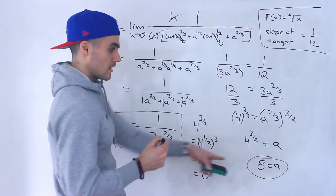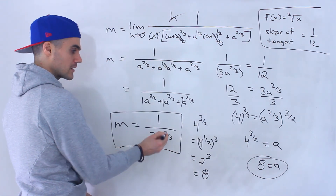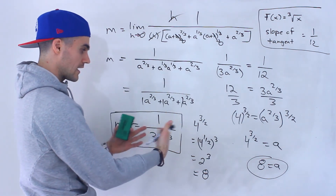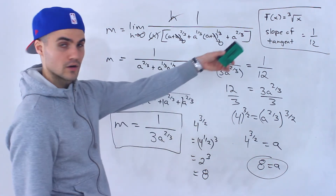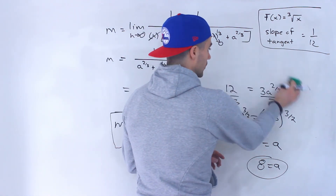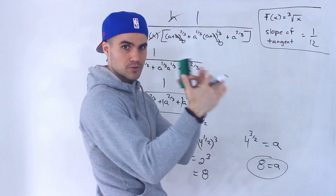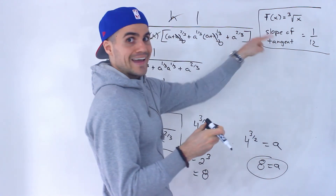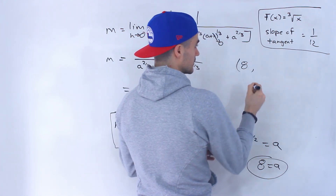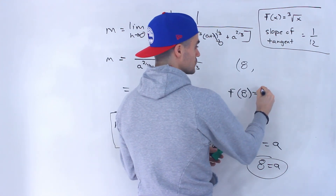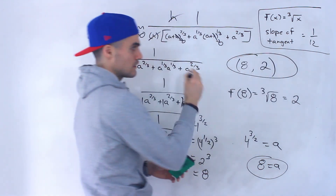So at x equals 8 on this function, the slope of the tangent is going to be 1 over 12. You can verify this: plug 8 into 1 over 3a to the 2/3 — 8 to the power of 2/3 gives 4, and 4 times 3 is 12, so the slope is 1 over 12. The question asks for the full coordinate, so we find f(8), which is the third root of 8, giving us 2. The full coordinate is (8, 2) — that's the final answer.